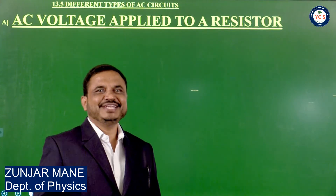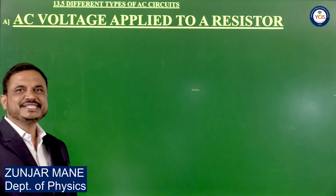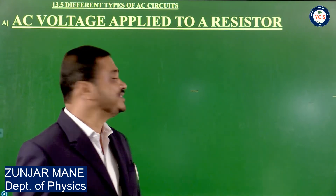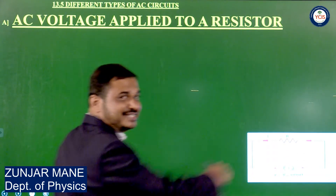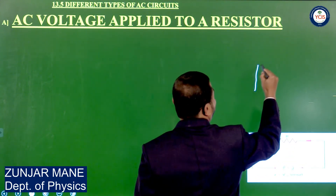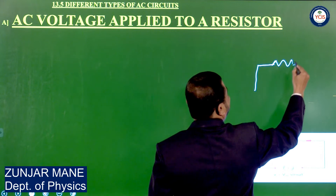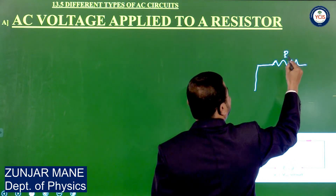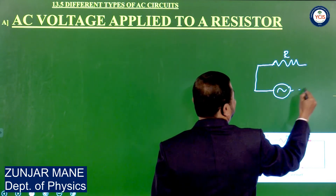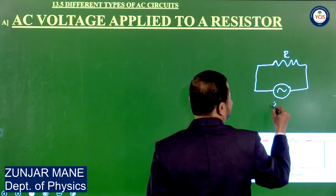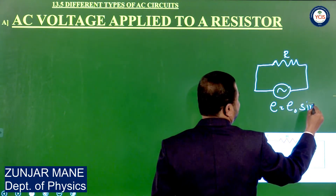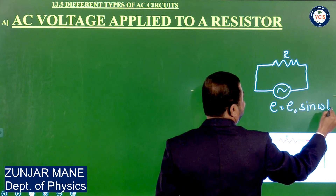Welcome students. Now the next article from the topic AC circuits: the simple AC circuit with a resistance only. Let us consider a simple AC circuit containing a resistance R connected across the AC supply E, that is equal to E0 sin omega T.